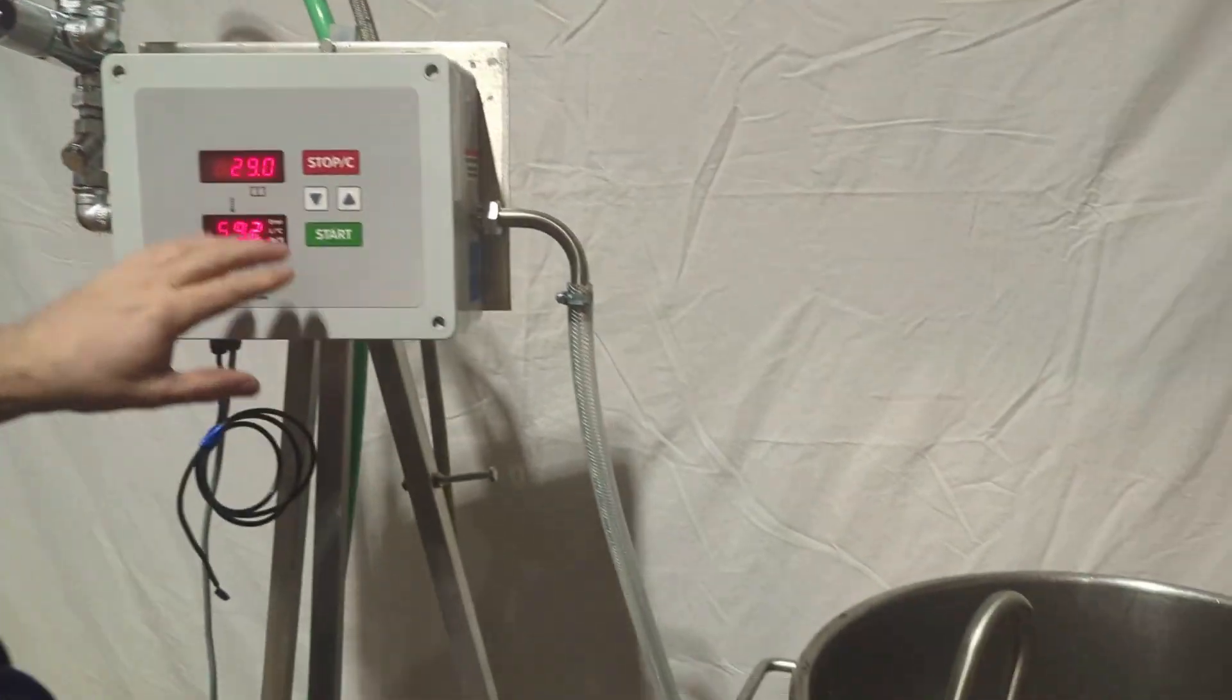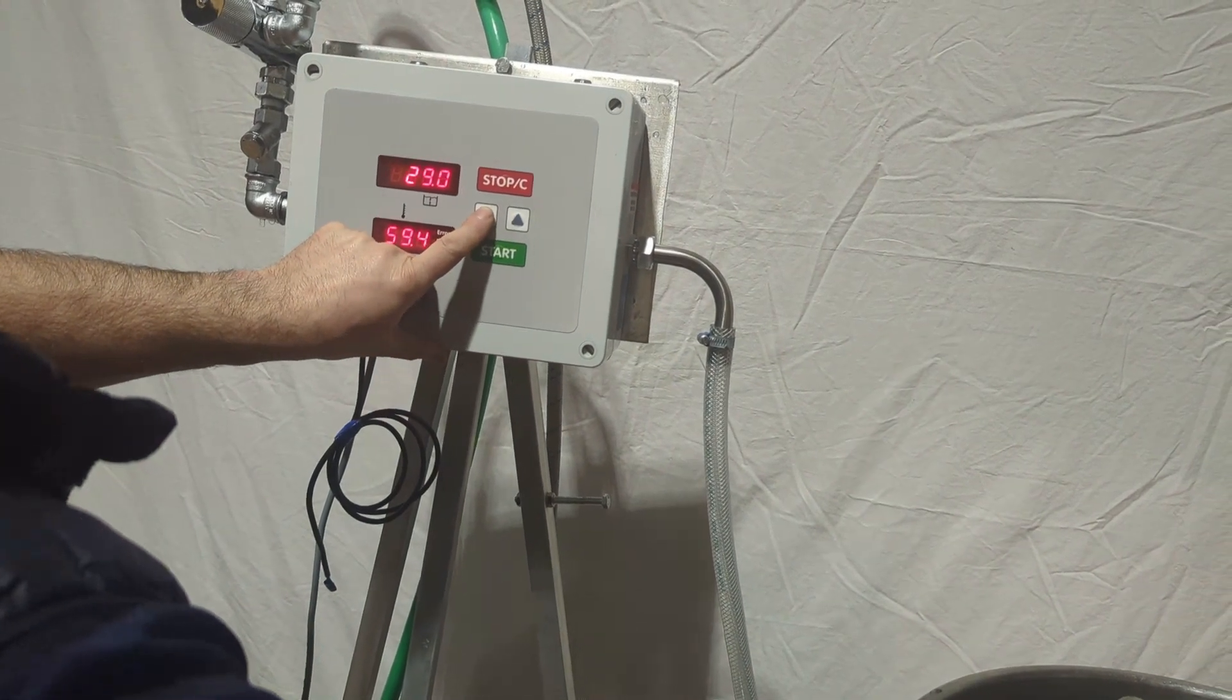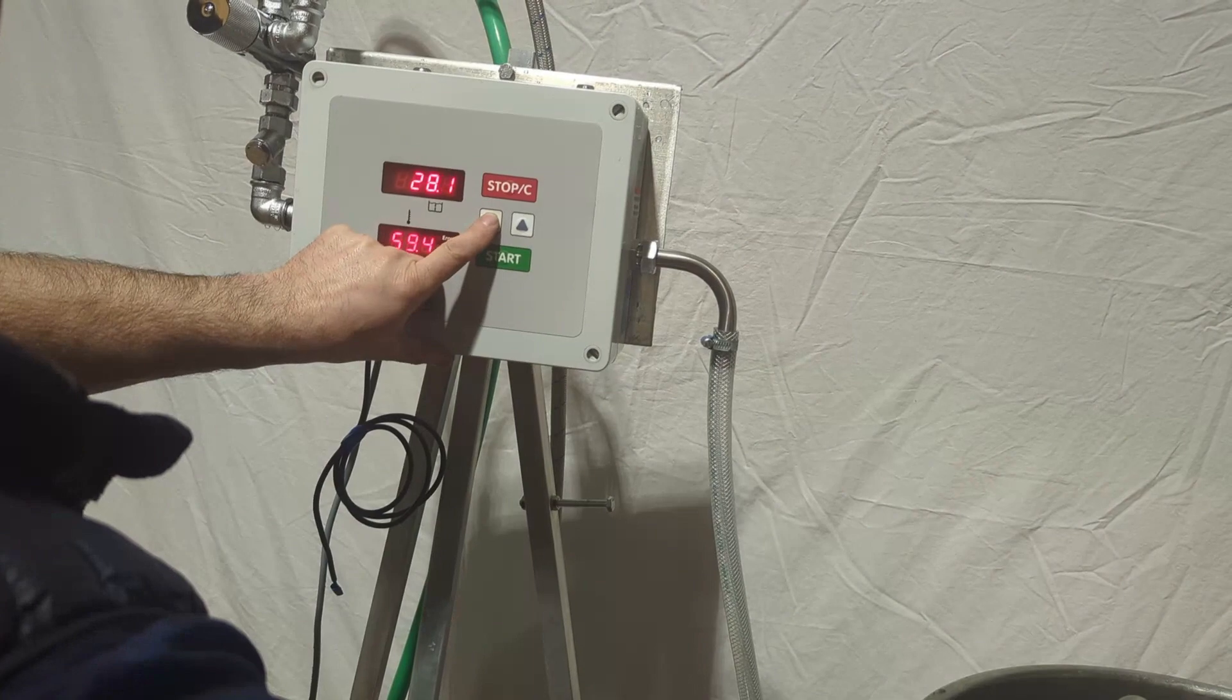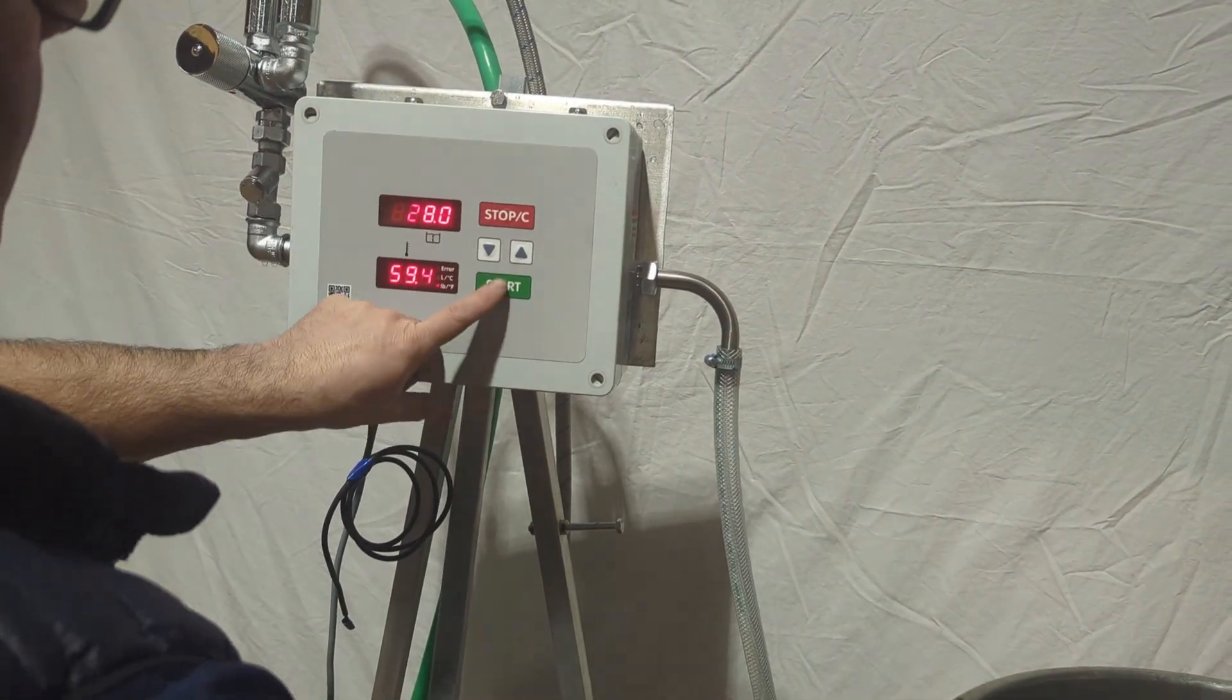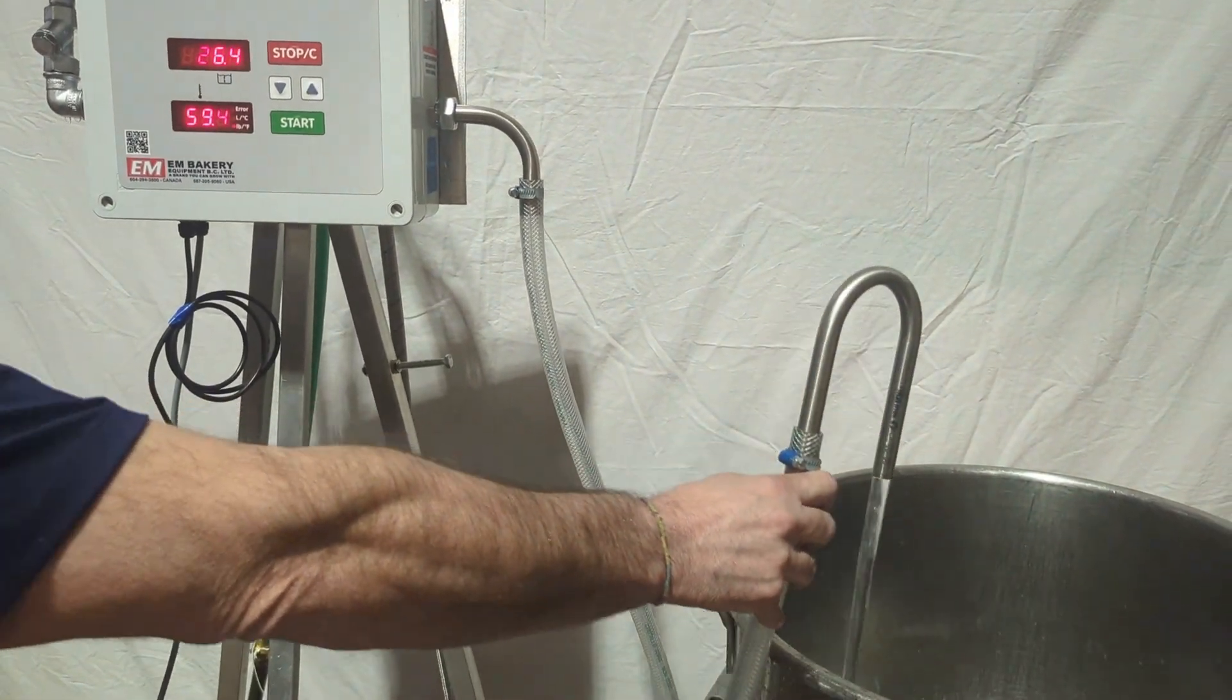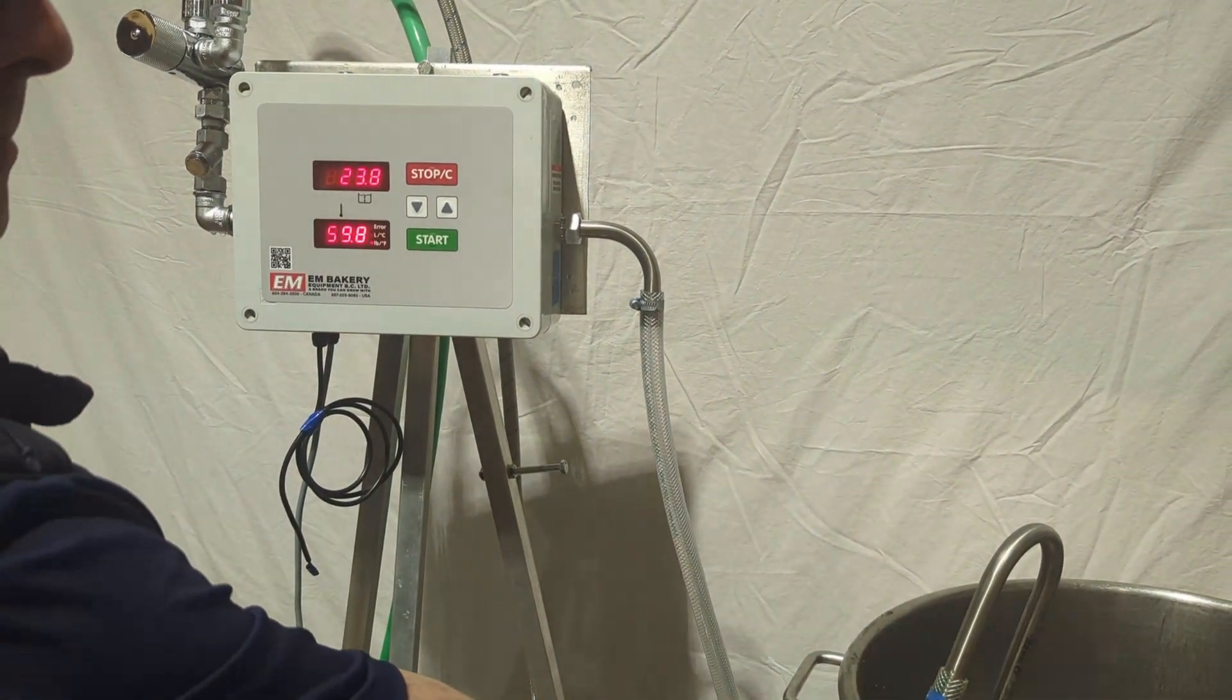We would hit stop twice to reset right to the beginning. We would use our up and down arrows to set to our actual desired quantity. Let's say 28 liters. Let's say that we're at 59.4. We would press start and then we would dispense into our mixing bowl, spiral mixer or planetary mixer, our desired amount.